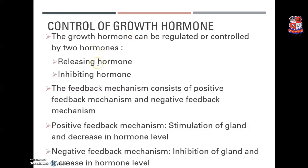Growth hormone regulation is based on a feedback mechanism consisting of positive and negative feedback. Whenever there is a fall in hormone levels in the blood, the hypothalamus is stimulated to secrete the respective releasing factor, which in turn stimulates the pituitary gland to secrete the tropic hormone, finally stimulating the gland to increase hormone release. Positive feedback causes stimulation of the endocrine gland in response to a decrease in hormone level. Negative feedback causes inhibition of the endocrine gland, resulting in an increase in hormone level. Thus, the anterior pituitary controls other endocrine glands, as it is itself controlled by the hypothalamus.